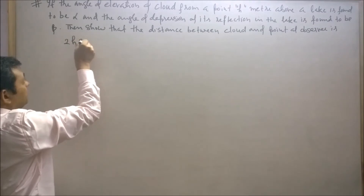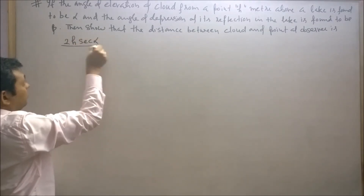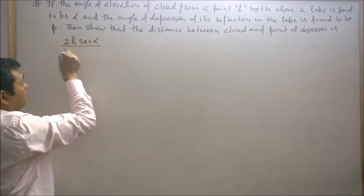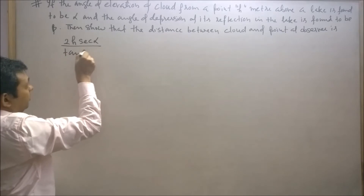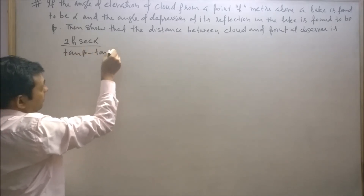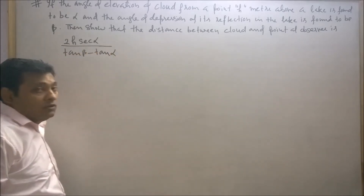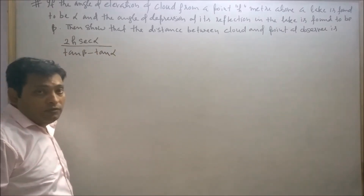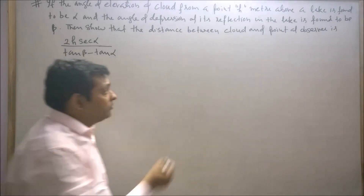The required distance is 2h·sec(α) upon tan(β) minus tan(α). So first of all I will draw the figure of this question.